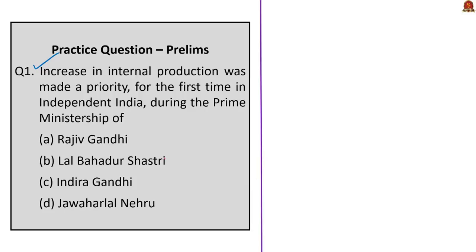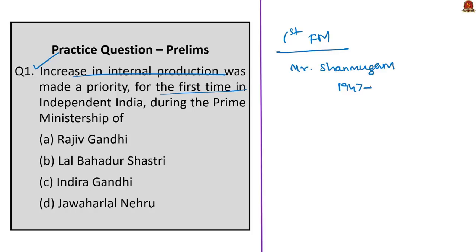Increase in internal production was made a priority by the first finance minister of independent India, Mr. Shanmugam Shetty, who was finance minister during 1947 to 1949. It was Pandit Jawaharlal Nehru who was the prime minister during that time period, and he was the first prime minister of independent India.